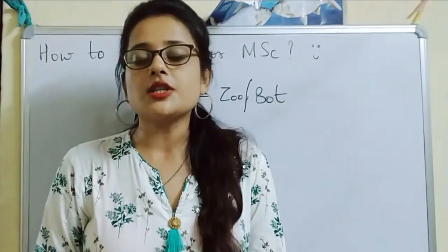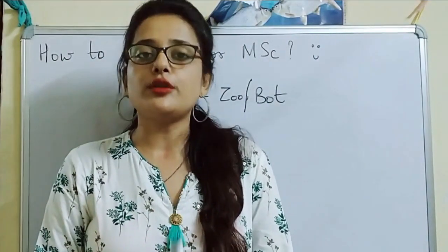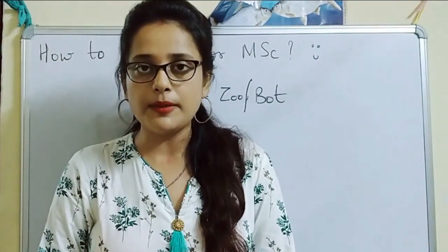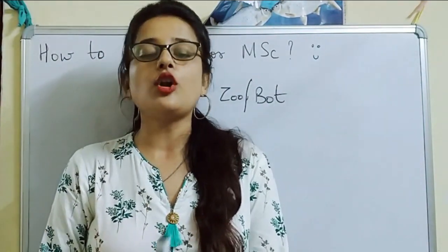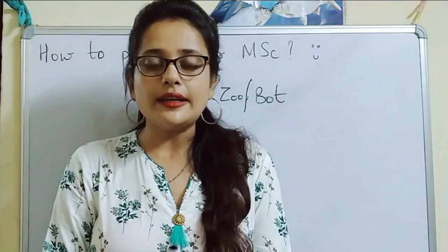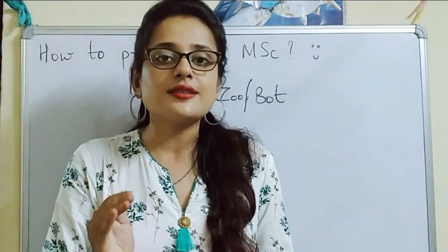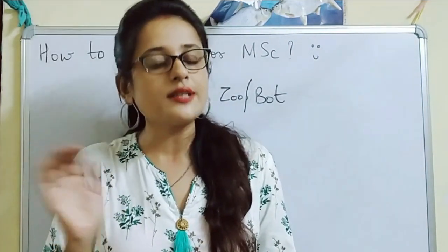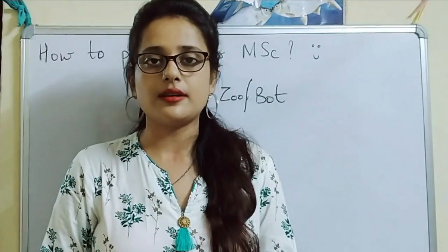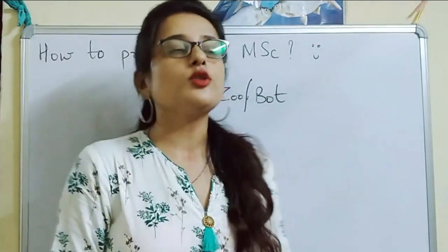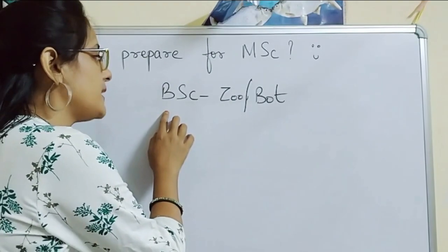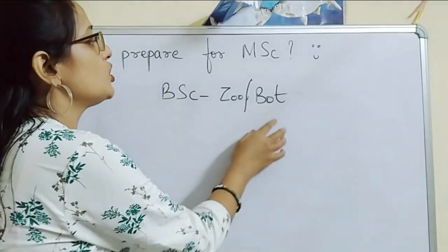So after proper research and analysis of your interest, if you want to undertake MSc, follow these steps. First of all, analyze which subject interests you and in which subject you want to pursue MSc. For example, if you have done BSc in geology or botany, there are options available.